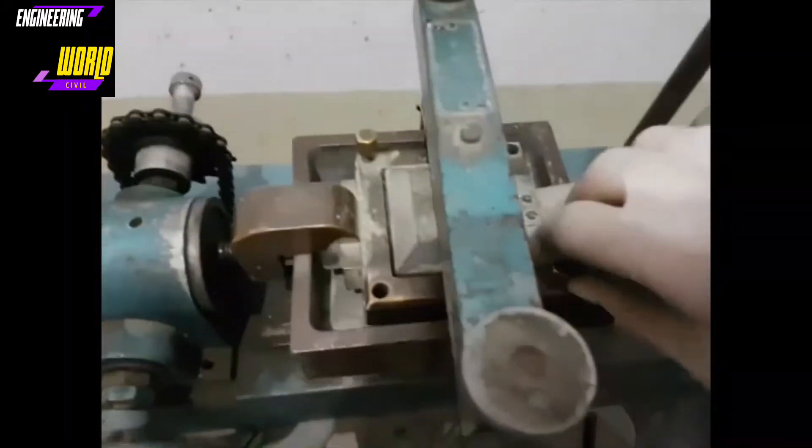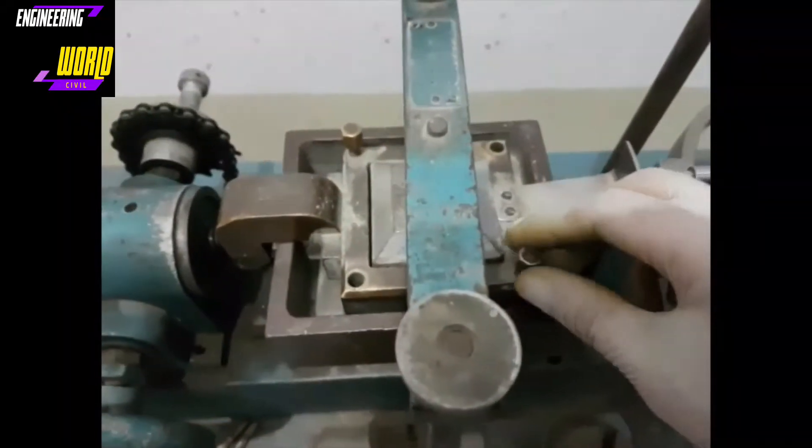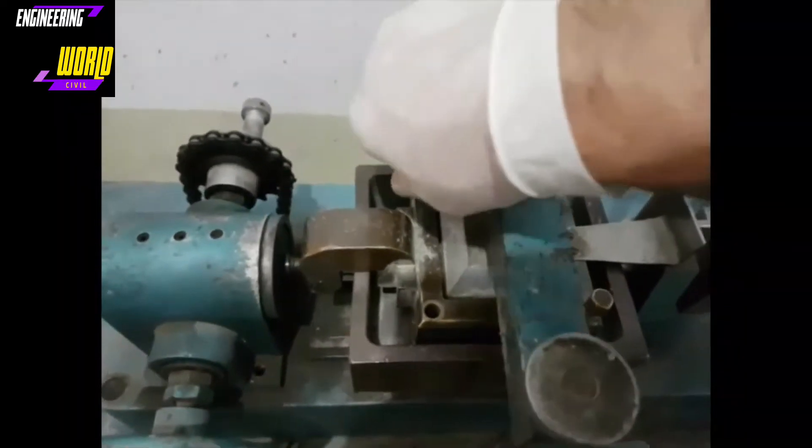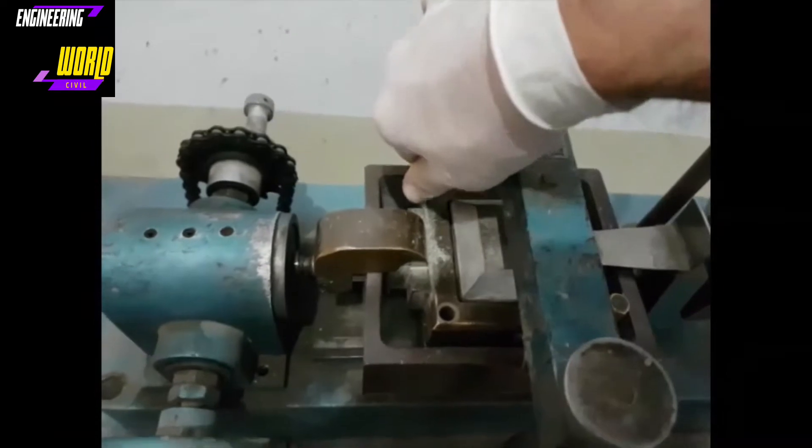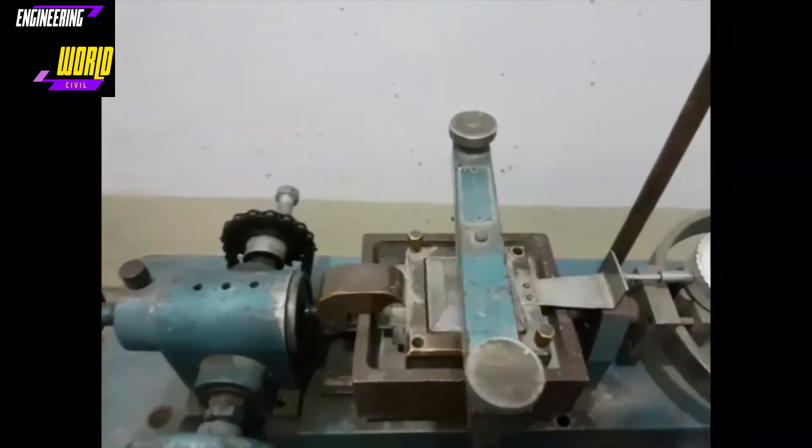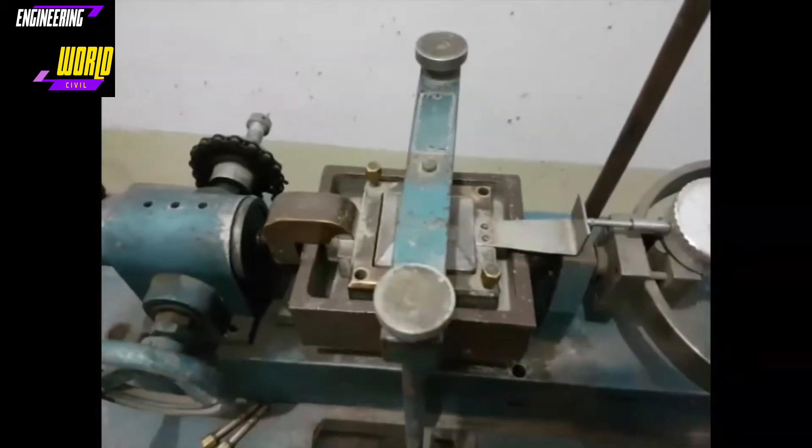Secondly, we will also tighten the separator screws just a bit to separate the upper and lower section of the shear box to ensure that there's a slight gap between them, so that they do not contribute to any friction.